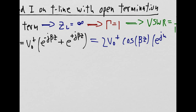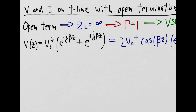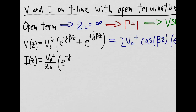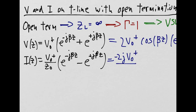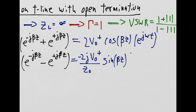As always, there is a time dependency that I'm going to write as e to the j omega t. Similarly, we can write an expression for the current. Notice the negative sign in the reflected current. This expression can be simplified to a sine function, with the time oscillation noted by e to the j omega t.